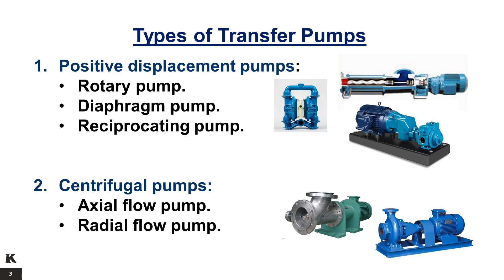The main disadvantages of a positive displacement pump versus a centrifugal pump are that dry running can be catastrophic due to either close clearances of parts, or in the case of progressive cavity pumps, the interference fit between the rotor and stator. All positive displacement pumps require the installation of a pressure relief valve to prevent failure of the pump or piping in case of accidental closure of the delivery valve or blockage in the piping. Most positive displacement pumps will also produce pulsations which can lead to undesirable effects like vibration, product damage, and water hammer. Positive displacement pumps also have a limited flow rate range compared to centrifugal pumps.